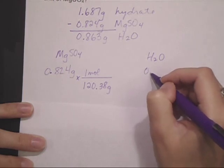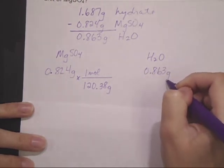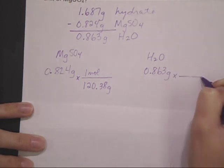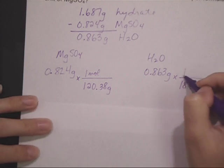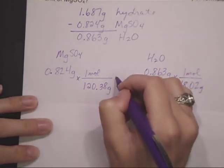Same thing for the water. We took the difference, we got 0.863 grams. The molar mass is 18 grams per mole.